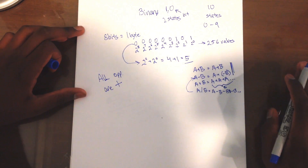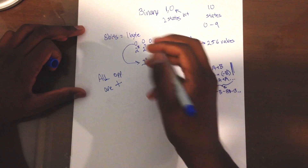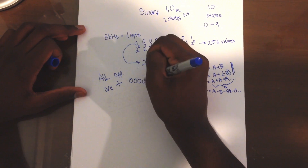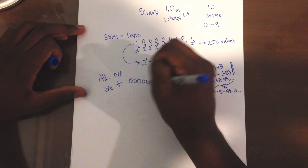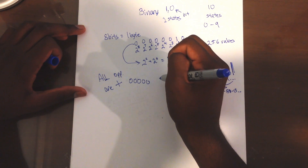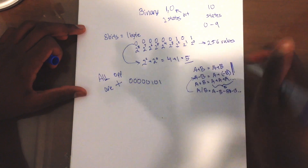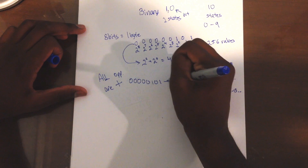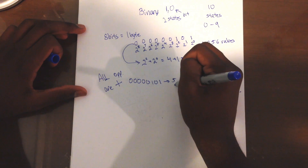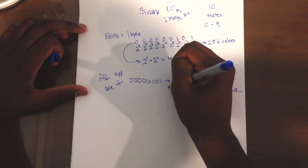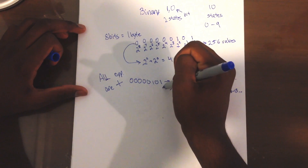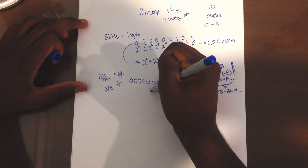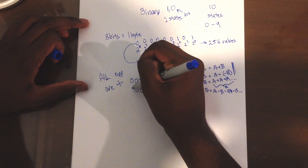So, how do you actually subtract numbers? Let's take the example we had — the number 0, 0, 0, 0, 0, 1, 0, 1. We already know this is the number 5. Let's add the number 9 to that. The number 9 is going to be 1, 0, 0, 0, 1, 0, 0, 0, 0. You can check that one out yourself for practice.